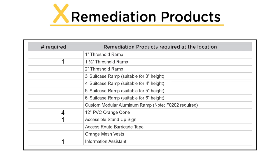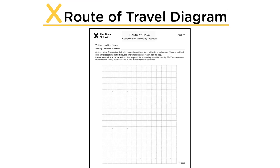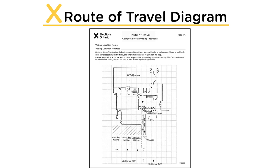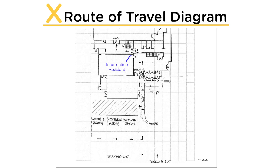The next section of the Voting Location Checklist F-0255 is Route of Travel. Draw a clear diagram of the accessible route as agreed upon with the landlord, indicating any accessibility issues and where remediation is required, all existing ramps, stairs, and doorways along the route, and any measurements. This diagram serves many purposes: it is included with the lease agreement, used to assist schools in determining if the route will impact students, and reviewed by the poll supervisor when they visit voting locations to ensure no changes have occurred between the inspection and polling day.